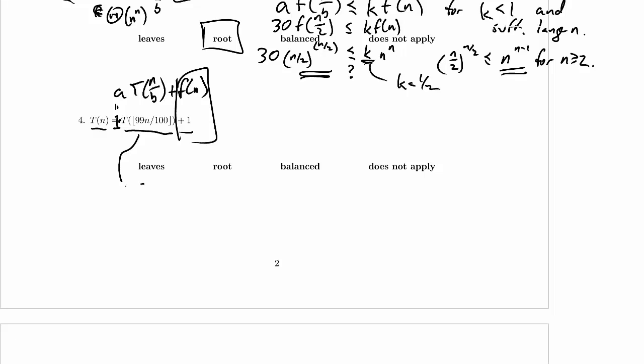Well we can easily rewrite this. This is the same as T(n/(100/99)). Same thing, I'll leave the floor in there, so we can see it really is the same thing.